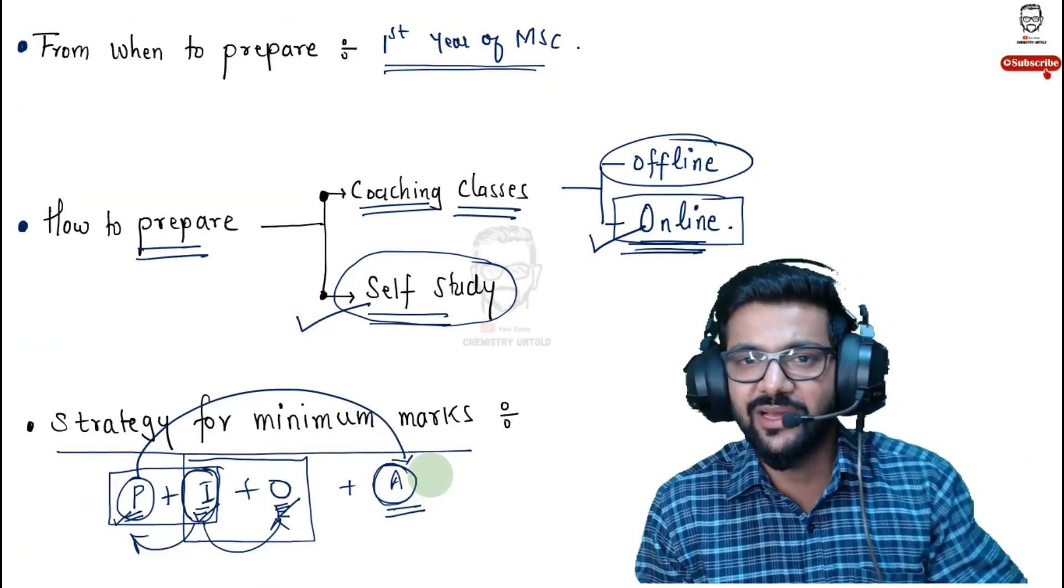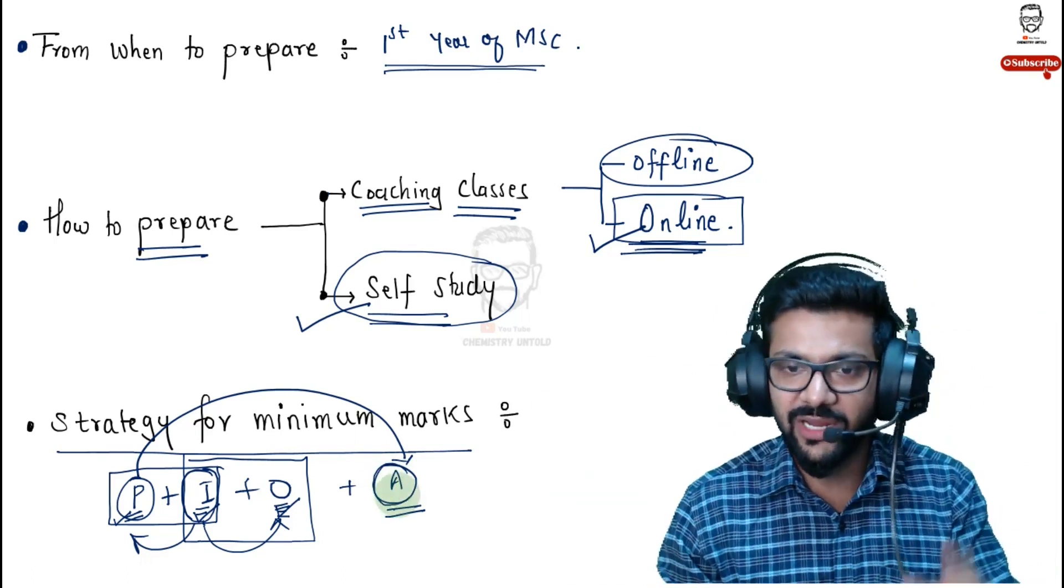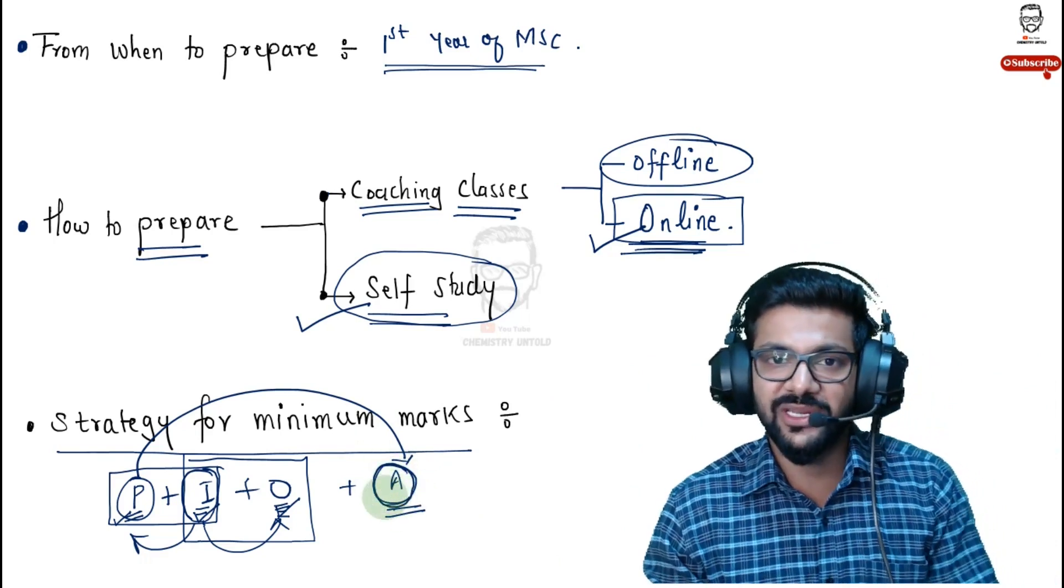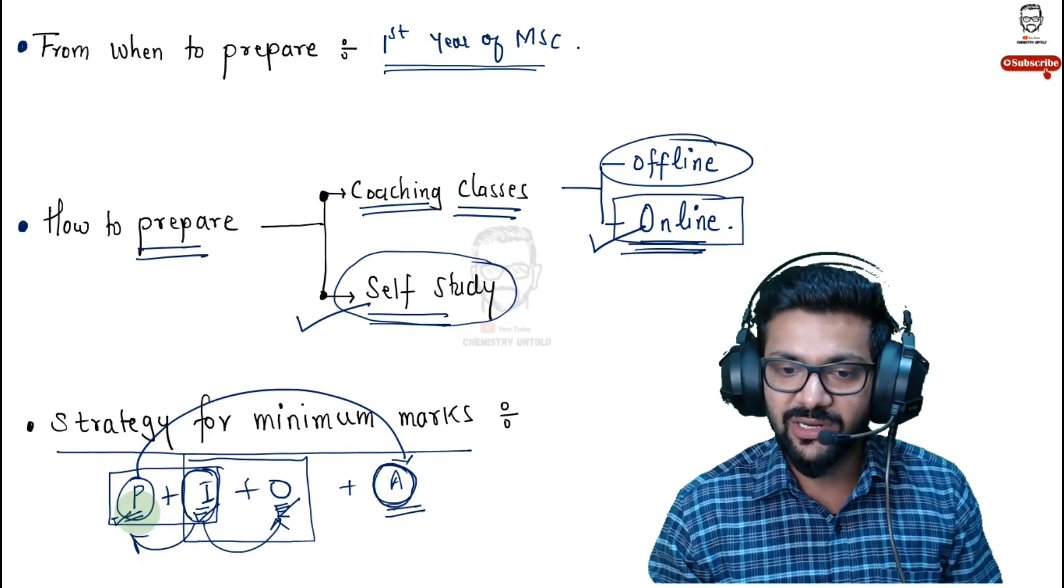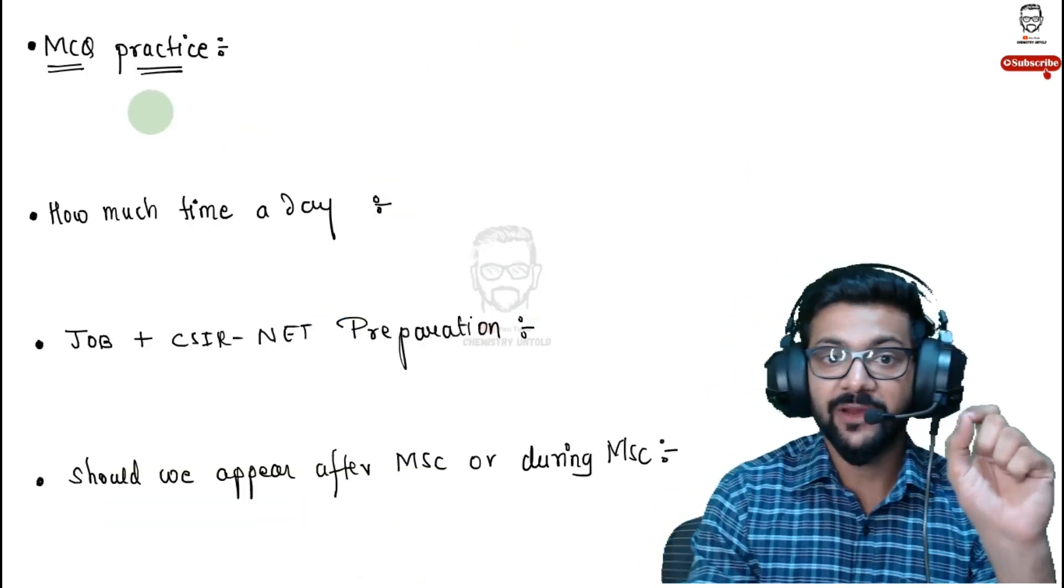Analytical chemistry doesn't have much weight in CSIR NET, so there won't be many questions from analytical chemistry. Indirectly you will have to study physical chemistry. So all the students who are having specialization in analytical chemistry, always keep physical chemistry as your first preference and then inorganic chemistry as your second preference.